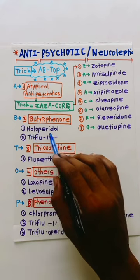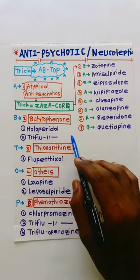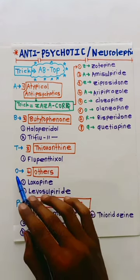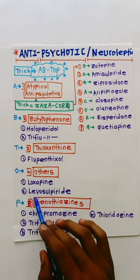In B for butyrofenones, we have haloperidol and trifluperidol. T for thiosanthines, we have flupentixol. Other drugs we have loxapine and levosulpiride.